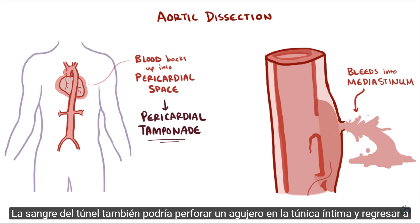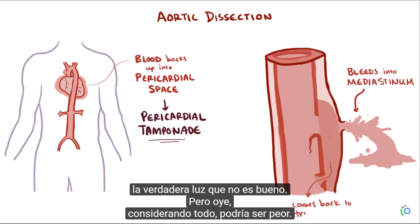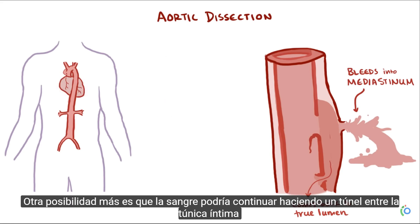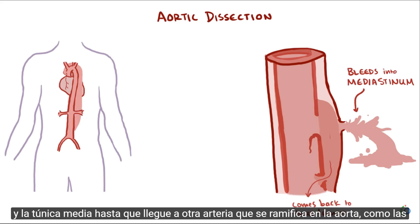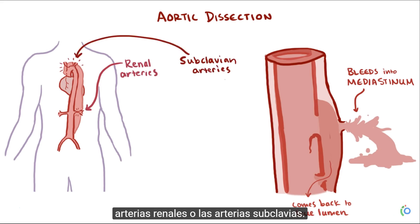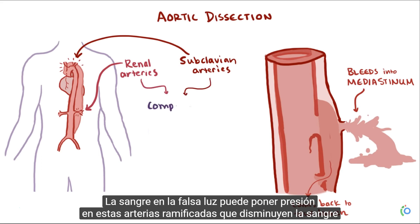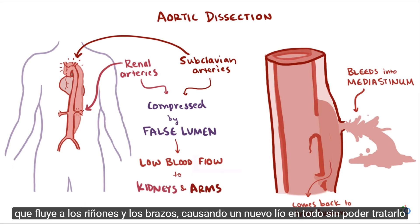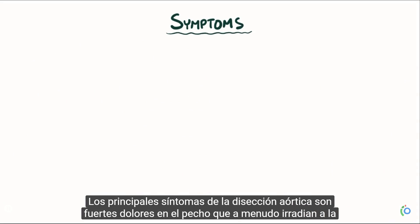The tunneling blood could also puncture a hole into the tunica intima and return into the true lumen, which isn't great but could be worse. Yet another possibility is the blood could continue to tunnel between the tunica intima and the tunica media until it reaches another artery that branches off the aorta, like the renal arteries or the subclavian arteries. The blood in the false lumen can put pressure on these branching arteries, decreasing blood flow to the kidneys and arms, causing a whole new mess to deal with.